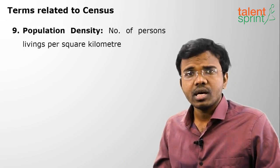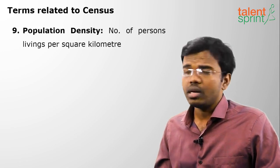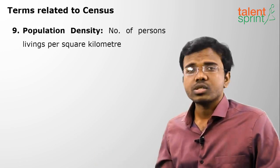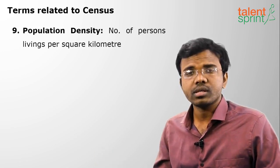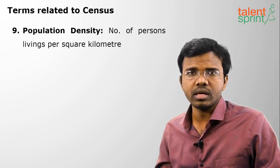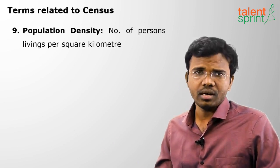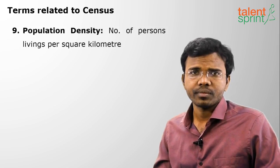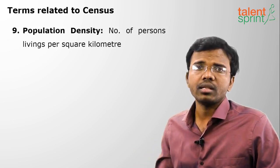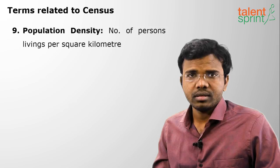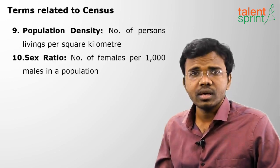The next term is population density, which means the number of people living per square kilometer. Suppose 100 people are living per one square kilometer, so population density is 100 there. Higher the population density, higher the crowd of people.